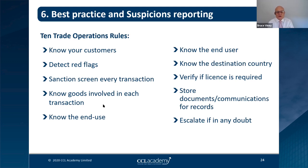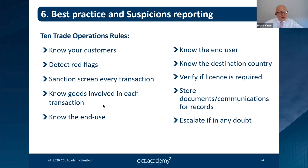Q&A: When it comes to a third party like a manufacturer, how do you do CDD? You probably can't do full CDD, but you can screen them, do adverse media checks, and do basic beneficial ownership checks — who owns the manufacturer is often findable. If the manufacturer is important enough to the transaction, go back to the seller and ask to be introduced to the manufacturer and include them. This is most likely when you have a standby letter of credit with default obligations if the seller doesn't pay the manufacturer.